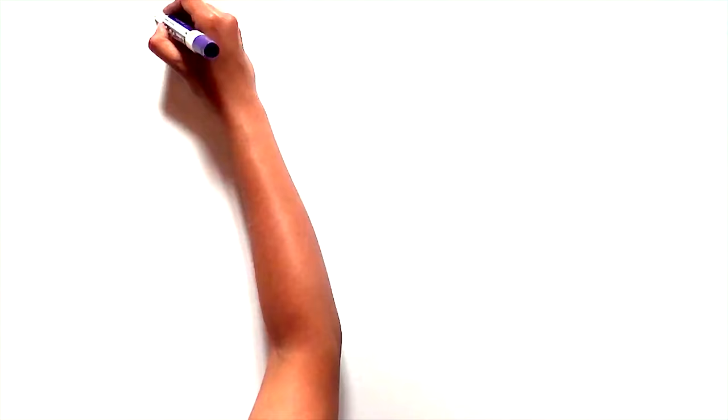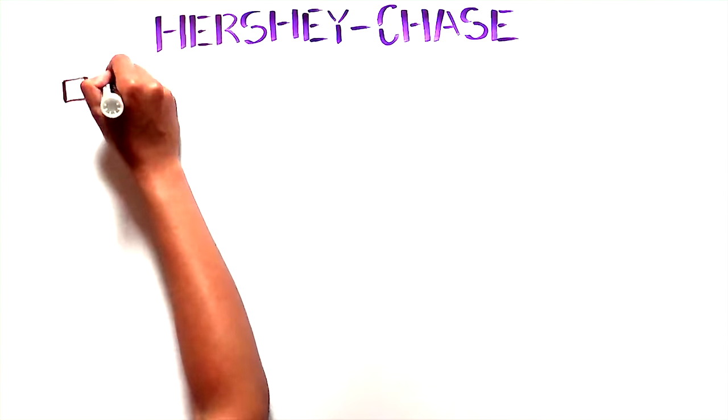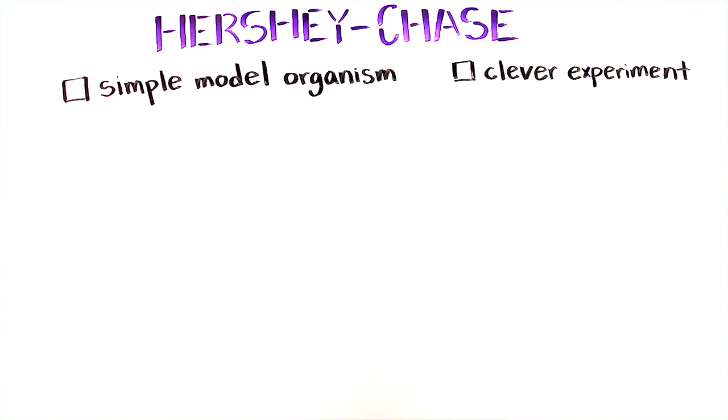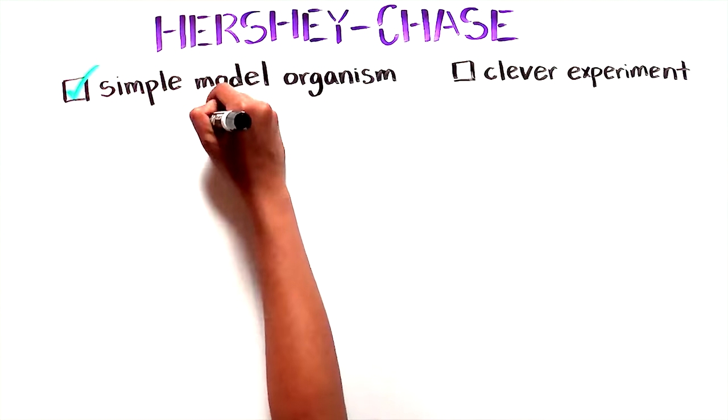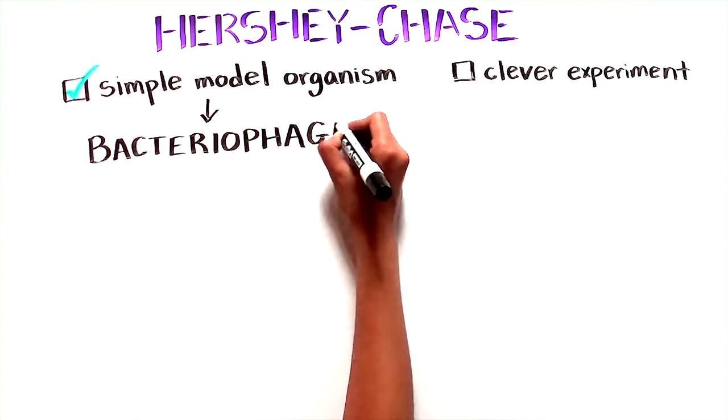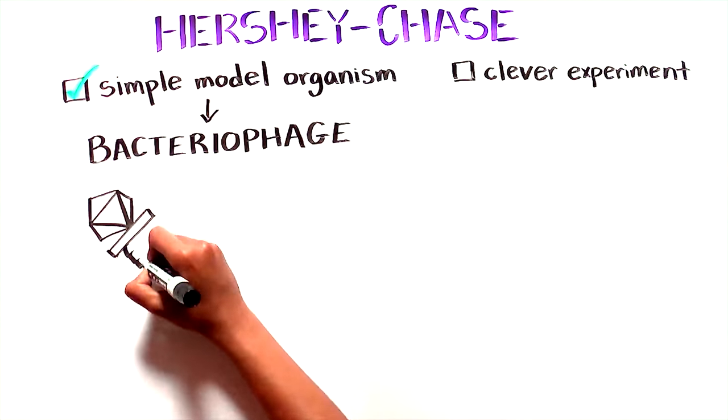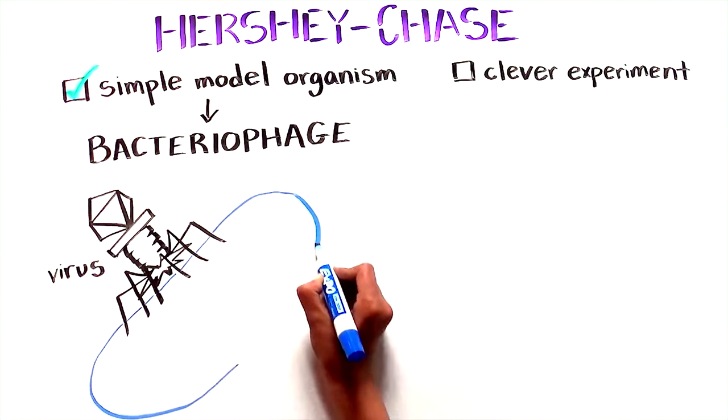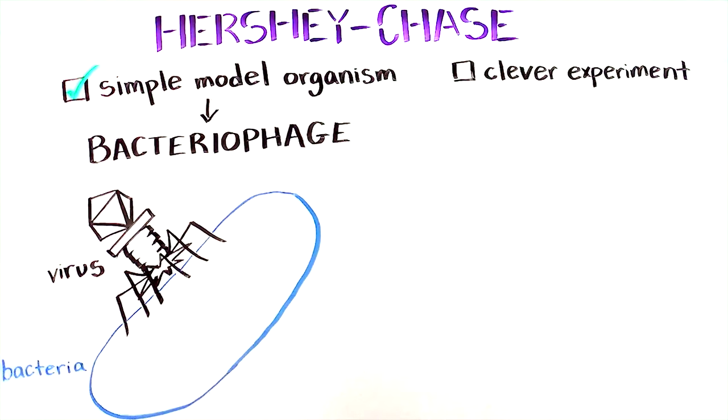To solve this important puzzle, Hershey and Chase needed a simple model organism to solve this complex question, and a clever experiment. They chose the simplest organism possible, a bacteriophage, which is a virus that infects bacteria. This virus looks a bit like a lunar landing module and attaches to the outside of the bacteria.